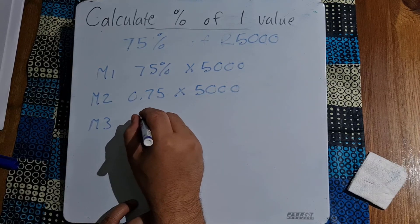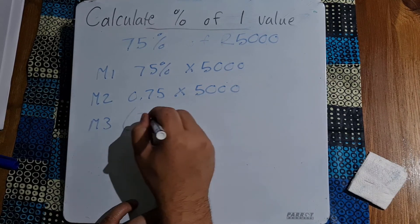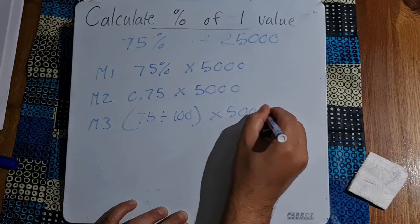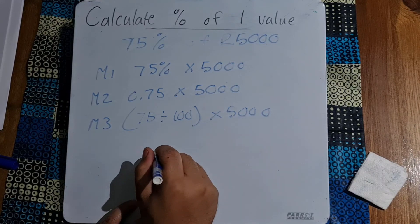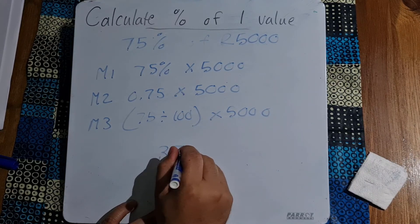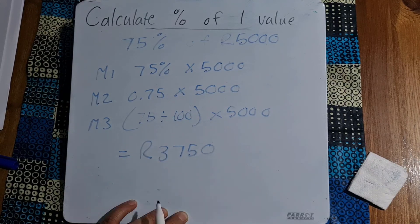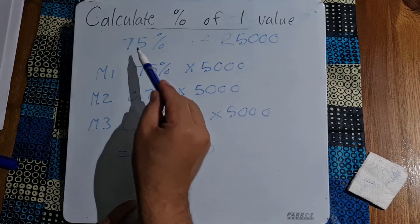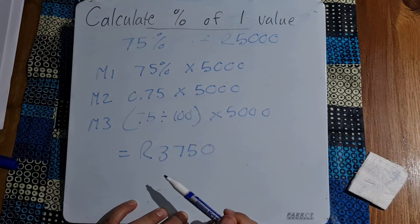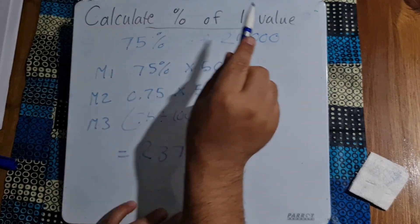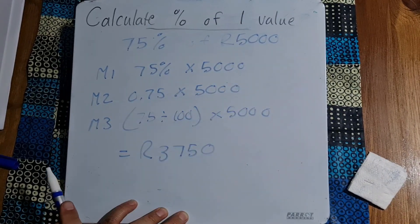Or we could use method number three to say 75 divided by 100 multiplied by 5,000 and that is still going to give you an answer of 3,750. That's in rands and that's how we get 75 percent of 5,000. This is calculating the percentage of one value.